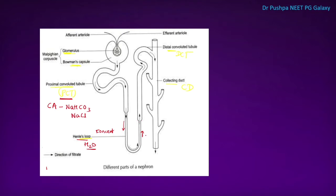In the ascending loop of Henle, there is a sodium-potassium-2-chloride symporter, so all the salts are reabsorbed — that is why it is called the diluting segment. Coming to the distal convoluted tubule, there is a sodium chloride symporter, so 10% of the sodium chloride is absorbed, and there is calcium absorption due to the hormone parathormone. About 5% of unabsorbed NaCl goes into the collecting ducts, where the hormones ADH and aldosterone act.